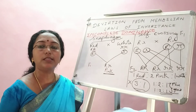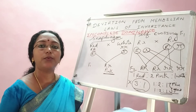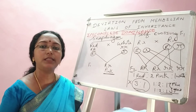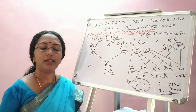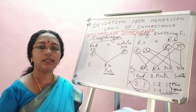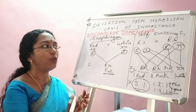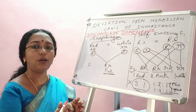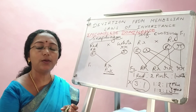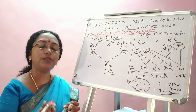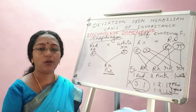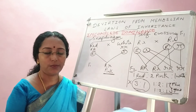The next question is: why does this deviation happen? The answer for why incomplete dominance occurs will be dealt with in the next video, after I explain the reason behind dominance. Thank you for now.